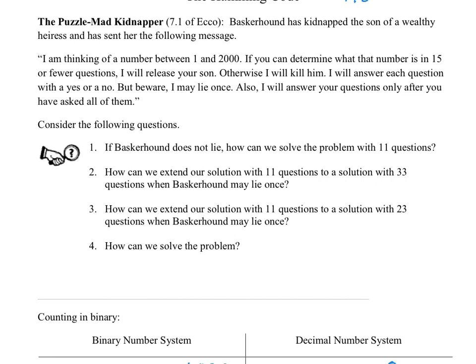What you could have done to deal with part 1 is ask Baskerhound: what is your number in binary? Now, of course, Baskerhound only answers with yes or no. So you wouldn't be able to directly ask what your number is in binary. But you could say, what is the first digit in binary? Is it a 1? Baskerhound could tell you yes or no, and so on and so on. Let's write that solution down.